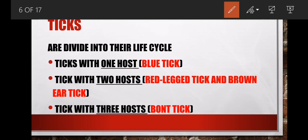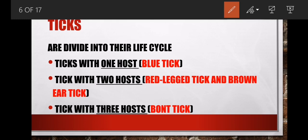Make sure you master these. You can earn three marks: classify the parasite as external, classify based on life cycle as one-host, and name the parasite as blue tick. They may also ask why it's called a one-host life cycle — answer: it requires only one host to complete its life cycle. Why two-host? It requires two hosts. Why three-host? It requires three hosts.